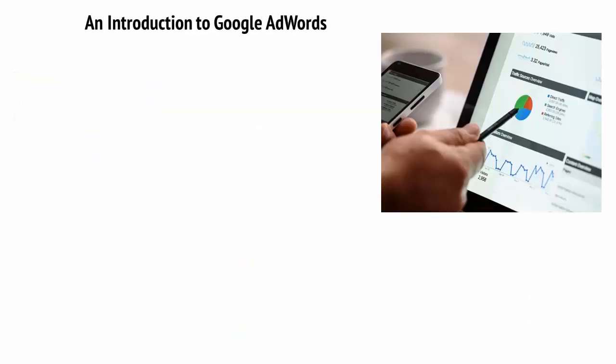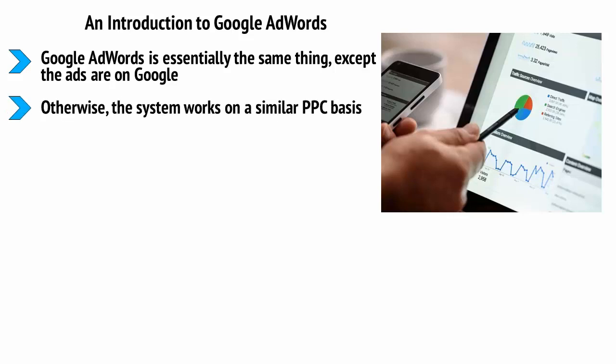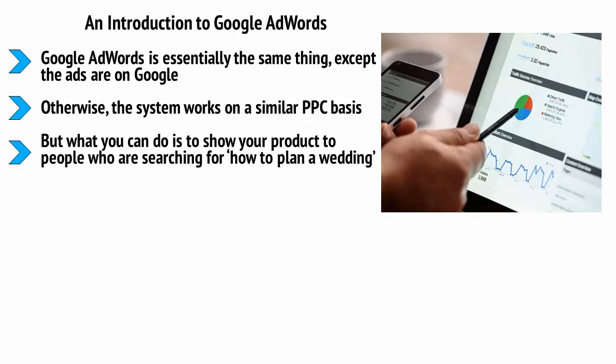An introduction to Google AdWords. Google AdWords is essentially the same thing, except the ads are on Google. You are now paying for ads to appear at the top of certain search results under the heading Sponsored Results. Otherwise, the system works on a similar PPC basis. On the one hand, you can't as precisely target the type of person looking for your product — for example, you can't choose to only show it to engaged women. But what you can do is show your product to people who are searching for how to plan a wedding. This has the benefit of being targeted while also being well-timed, as your audience is not only likely to want to learn about wedding planning, but they're actively looking for information.